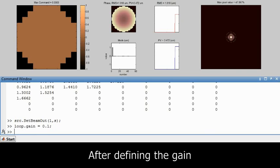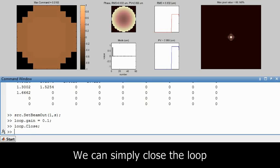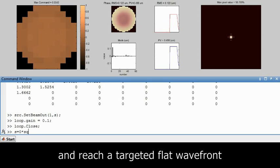After defining the gain we close the loop to compensate for the perturbation. As we can see on the display, the wavefront is flattened and the resolution is improved as the mirror shape compensates for the perturbation.